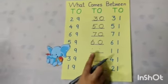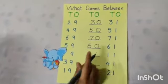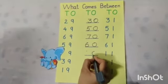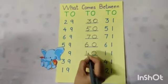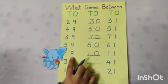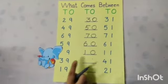Next number is 9. So, here will come 0, and here tell me fast. Yes, 1. So, 1, 0, 10 comes between 9 and 11.